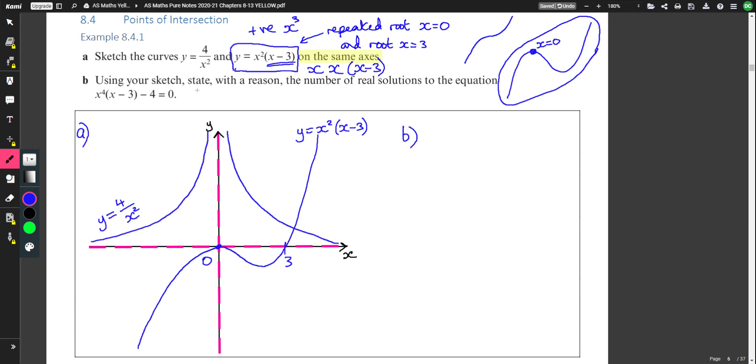Part B, using a sketch. So don't do anything from scratch. Use your sketch. State with a reason the number of real solutions to this equation. Let's write it down. x to the 4 brackets x minus 3 minus 4 equals 0.